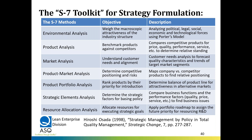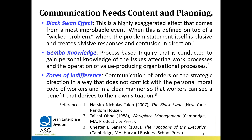Strategy formulation is still going to be the act of management, but we have a couple of things to look out for. One is the black swan effect — a highly exaggerated effect from a very improbable event. When this is defined on top of a wicked problem — where the problem statement itself is elusive, creates a divisive response, and confuses people in terms of directions — we have to be aware of these high-impact, low-probability events. A tsunami hitting Japan is a black swan type of effect: in hindsight we can say we should have known it was coming, but we didn't prepare.